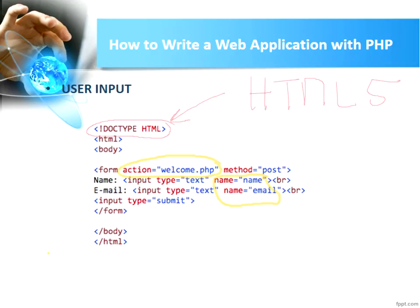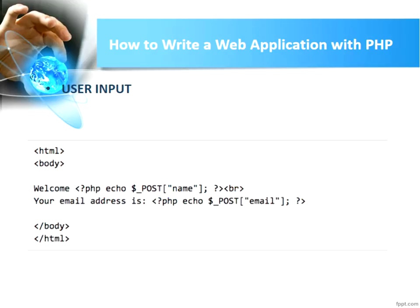The method attribute is also important. When we have an HTML form, the important things are: the action, the names of the different fields, and the method.